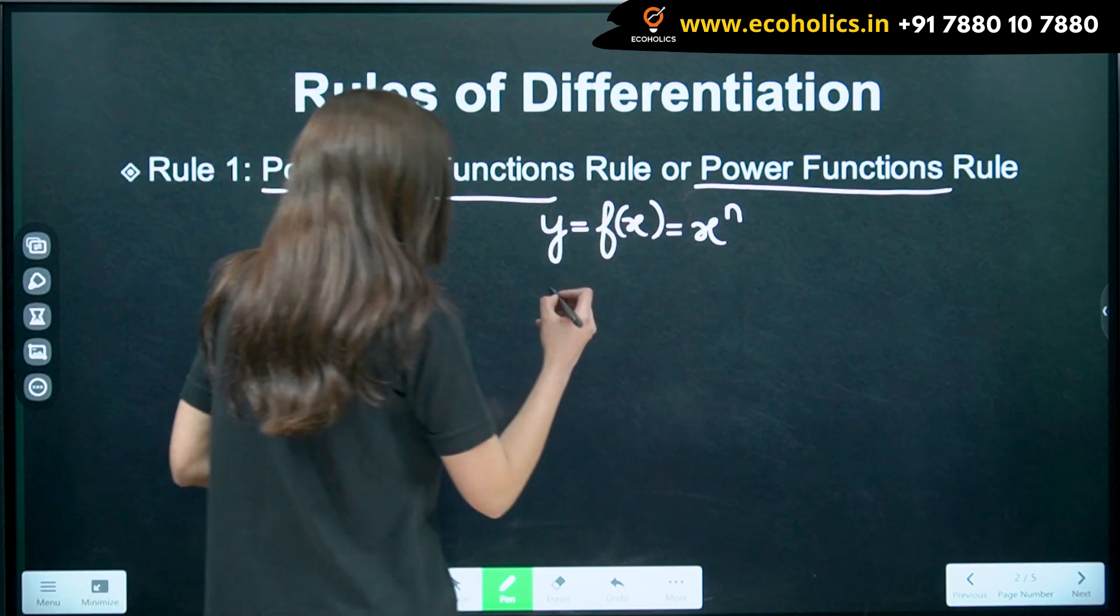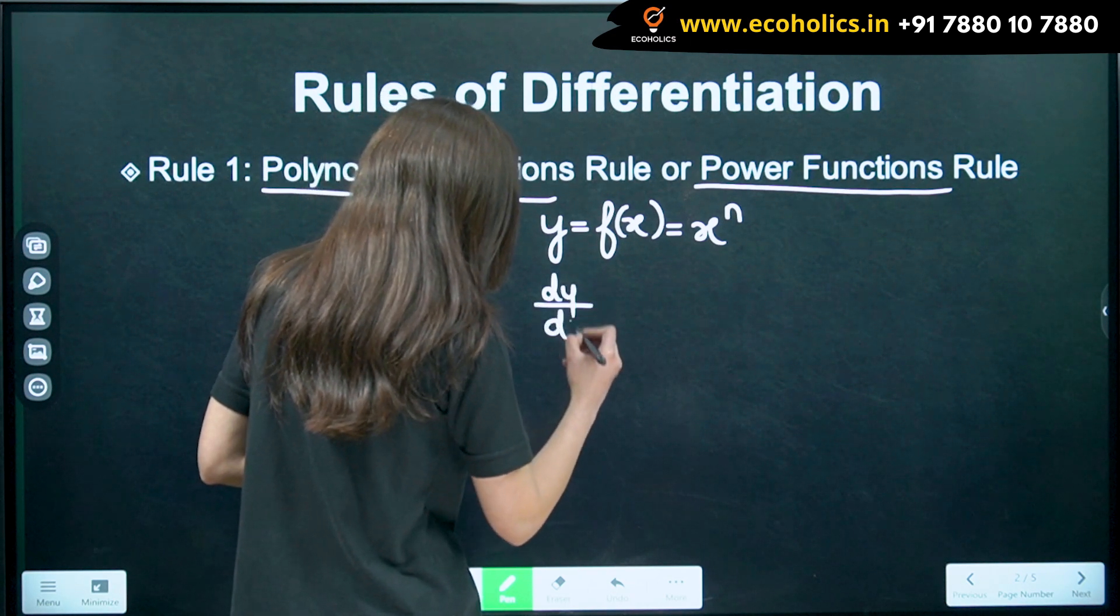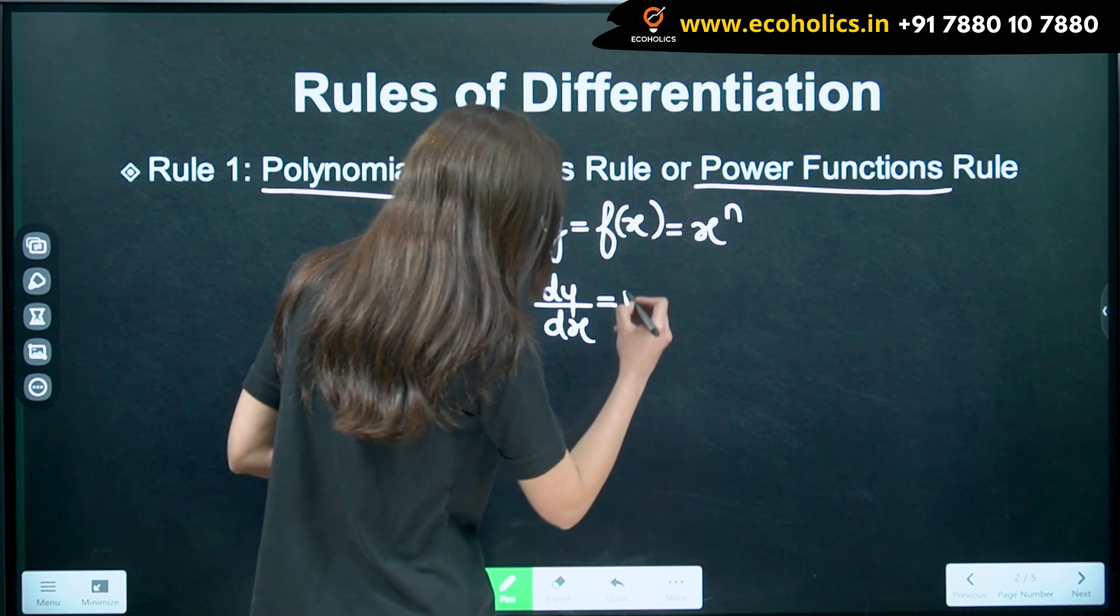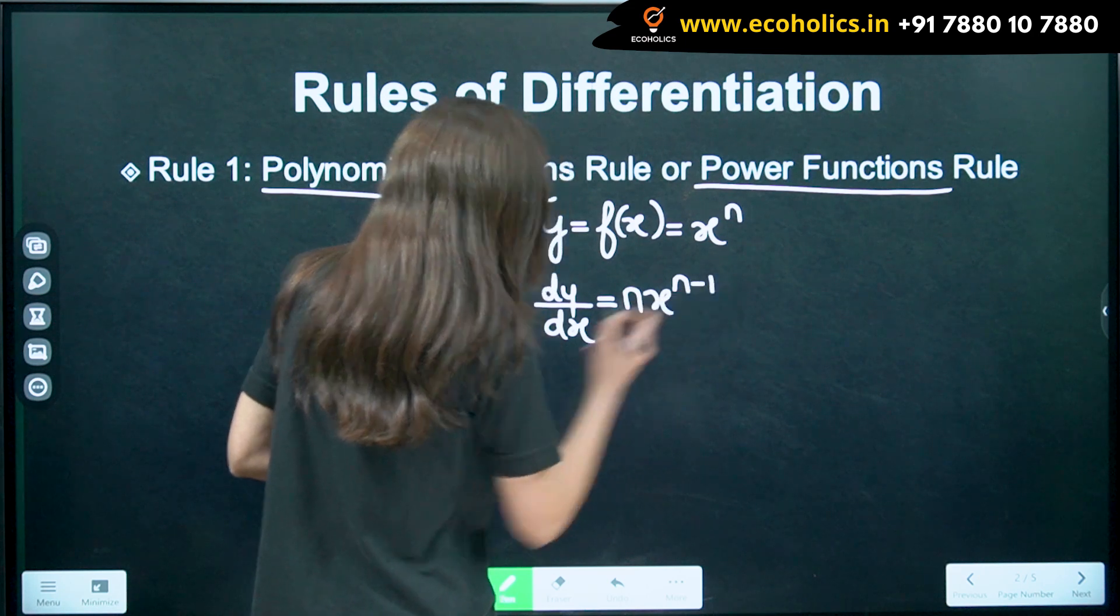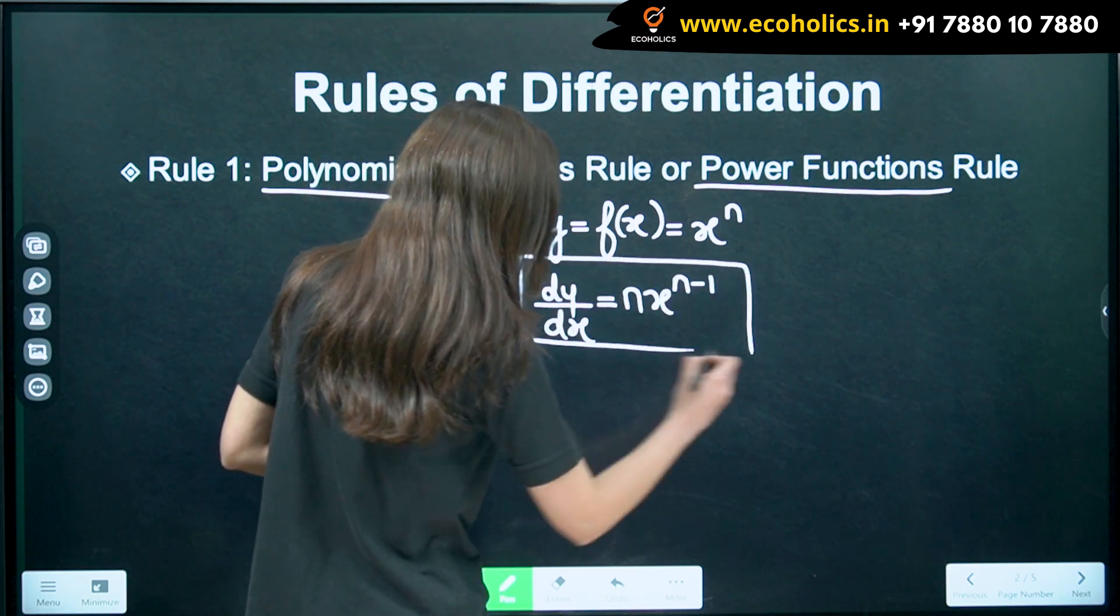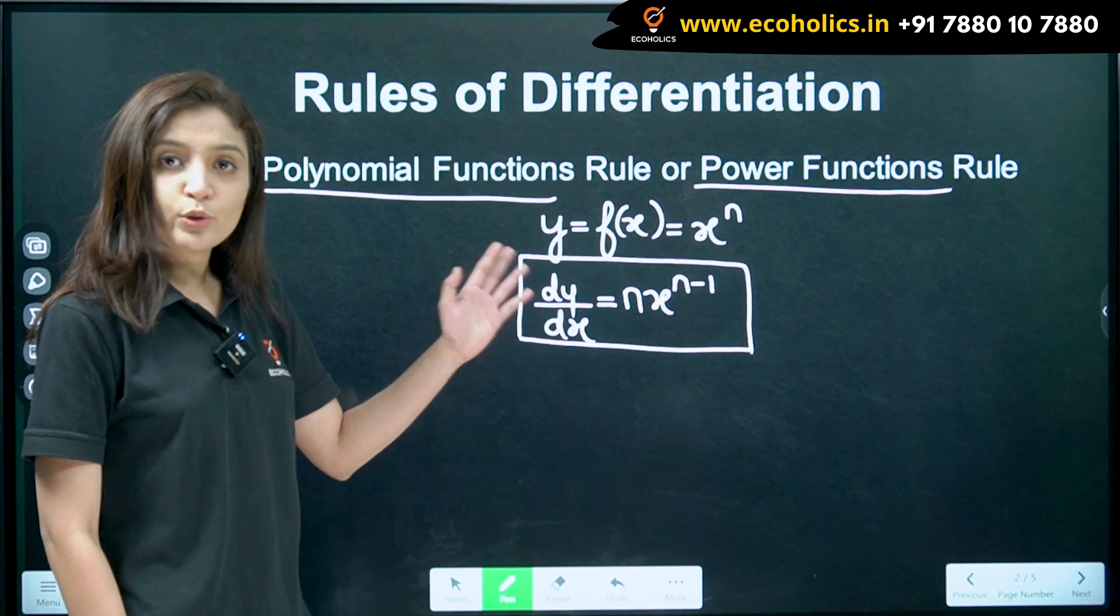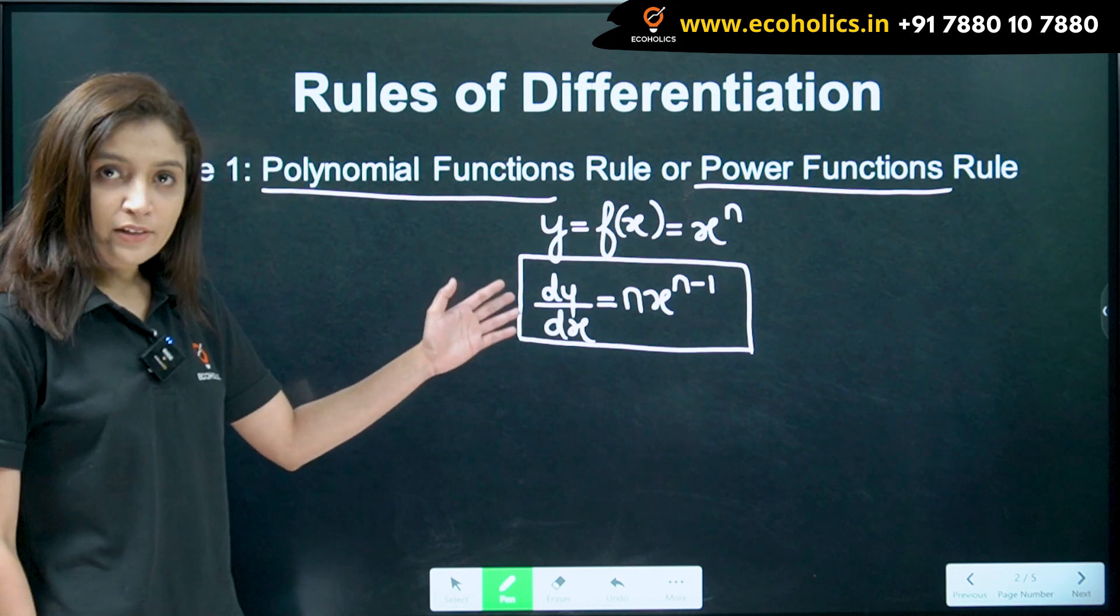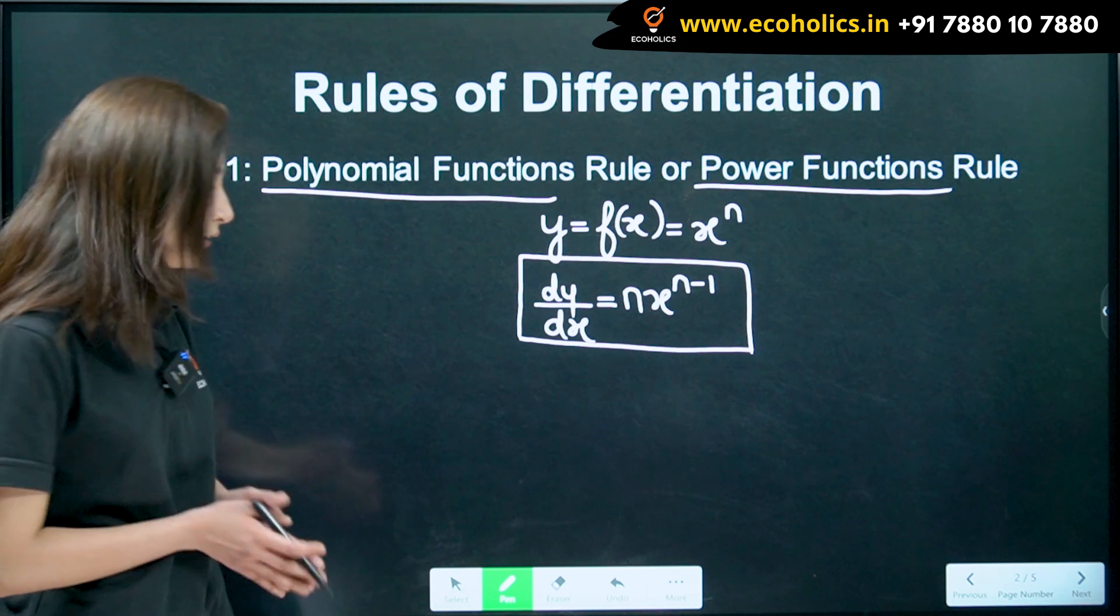Now, the formula or the derivative of power function is nx raised to n minus 1. You just need to remember this formula. You don't have to understand how it is derived. You just need to memorize or know this formula and know how to apply it.